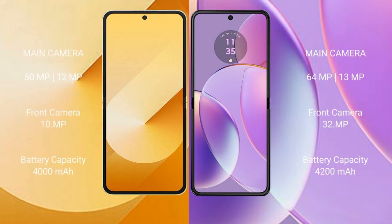Samsung Galaxy Z Flip 6 has a dual camera setup with 50MP plus 12MP, and a front camera of 29MP. Motorola RAZR 40 has a dual camera setup with 64MP plus 13MP, and a front camera of 32MP.